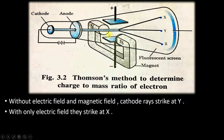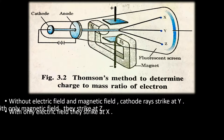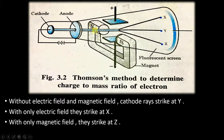Now, when only the magnetic field is connected and the electric field is removed, the cathode rays, instead of traveling and hitting at Y, get deflected downward toward point Z.